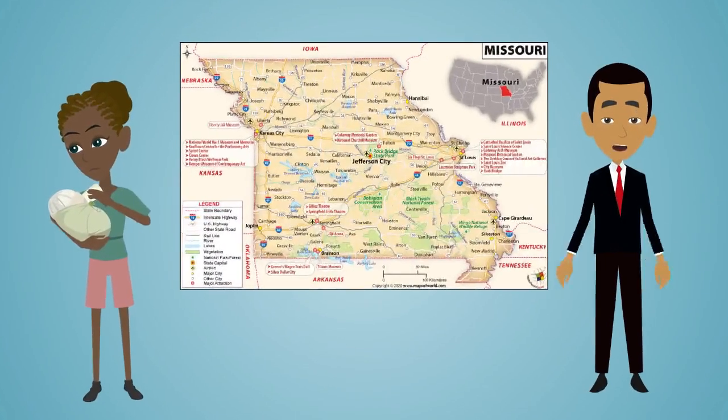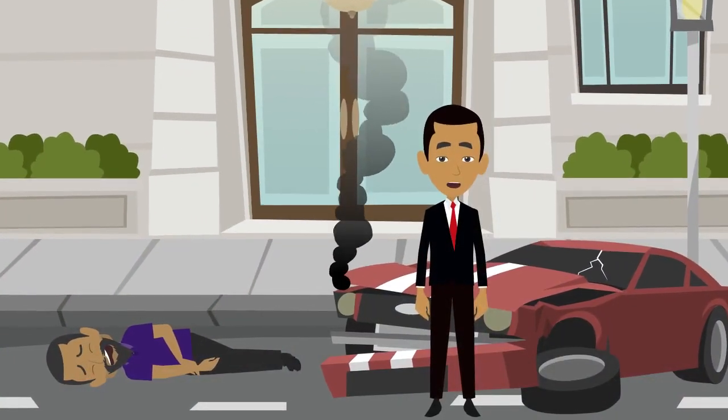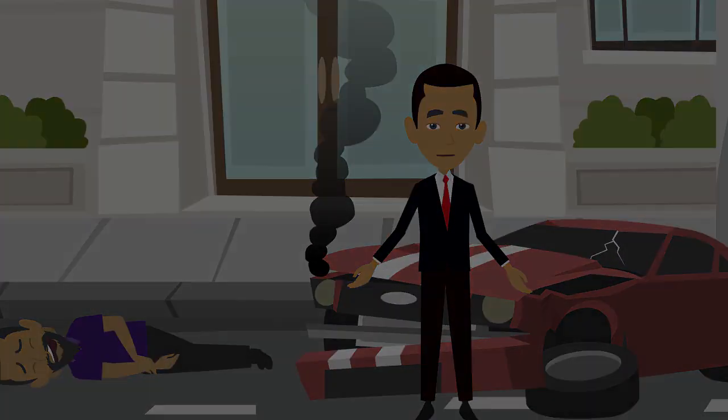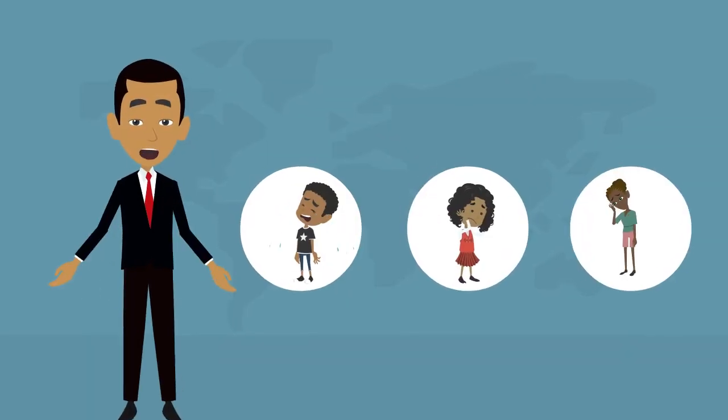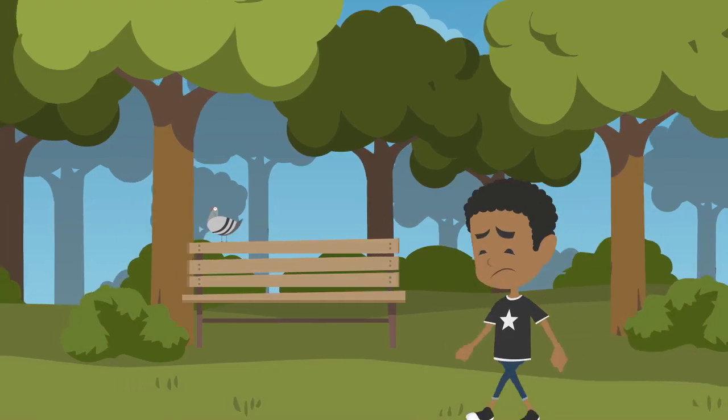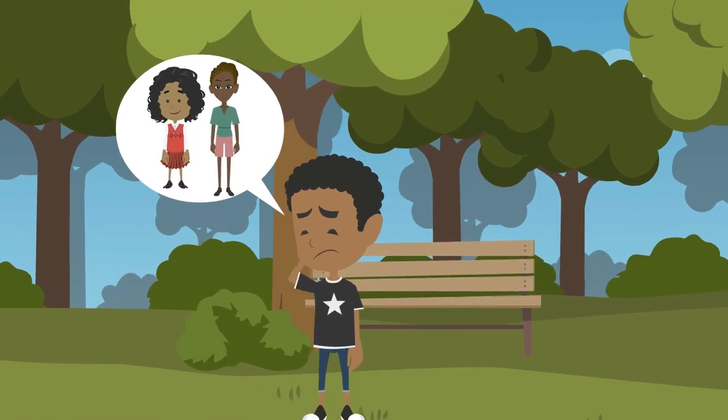George Washington Carver was born into slavery in Missouri. His father was killed in an accident shortly after he was born. George, his sister, and mother were kidnapped and taken to Arkansas. George was returned to the farm but never saw his mother and sister again.